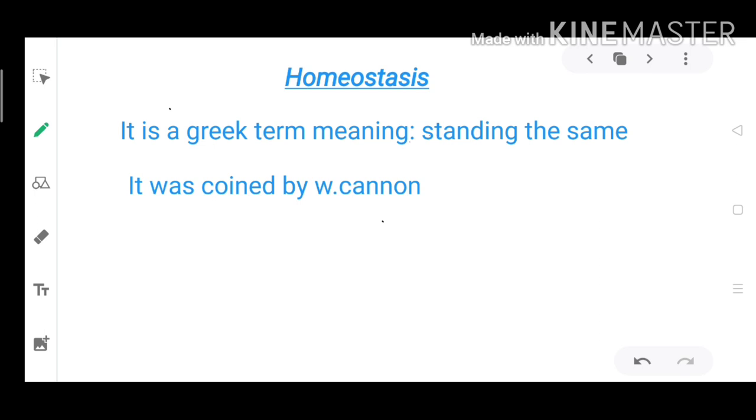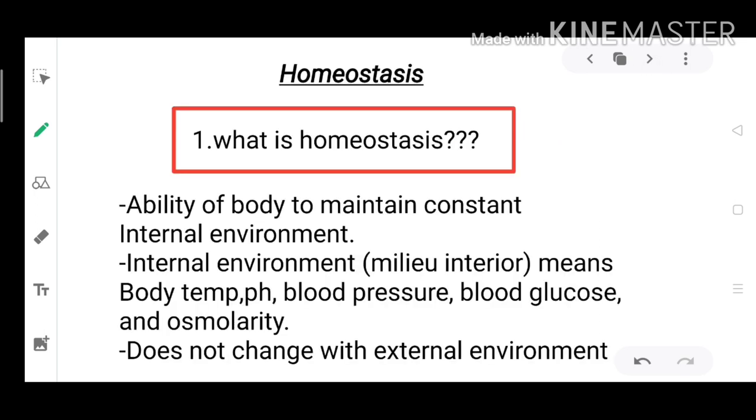Homeostasis is a Greek term meaning standing the same. It was coined by Canon. What is homeostasis? Homeostasis is the ability of body to maintain constant internal environment. Internal environment, also called milieu interior, means body temperature, pH, blood pressure, blood glucose, and osmolarity.